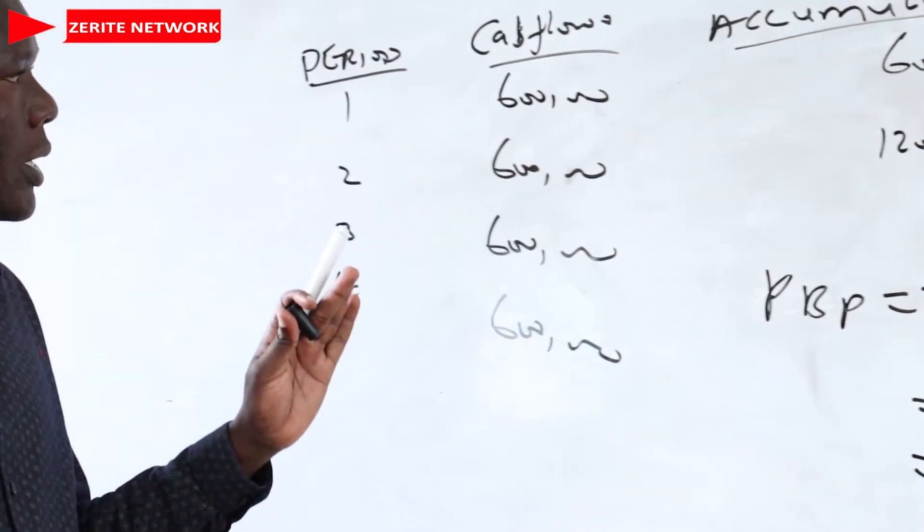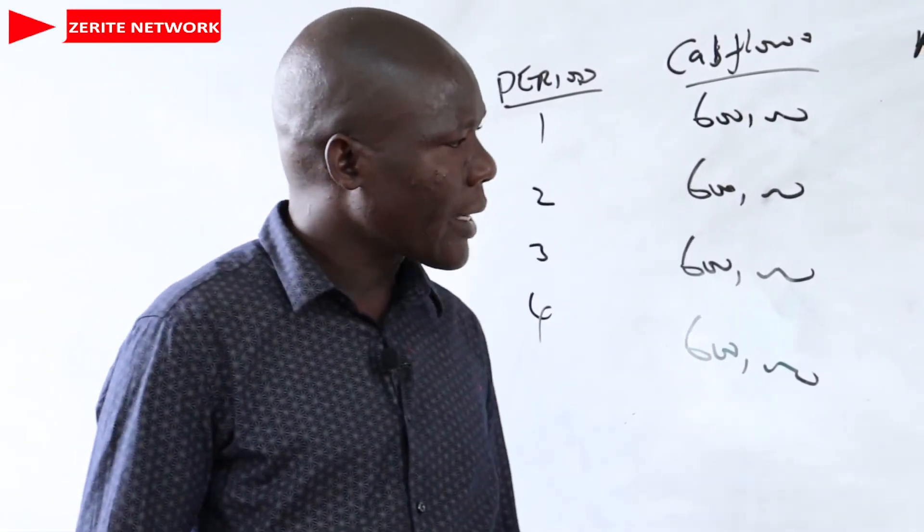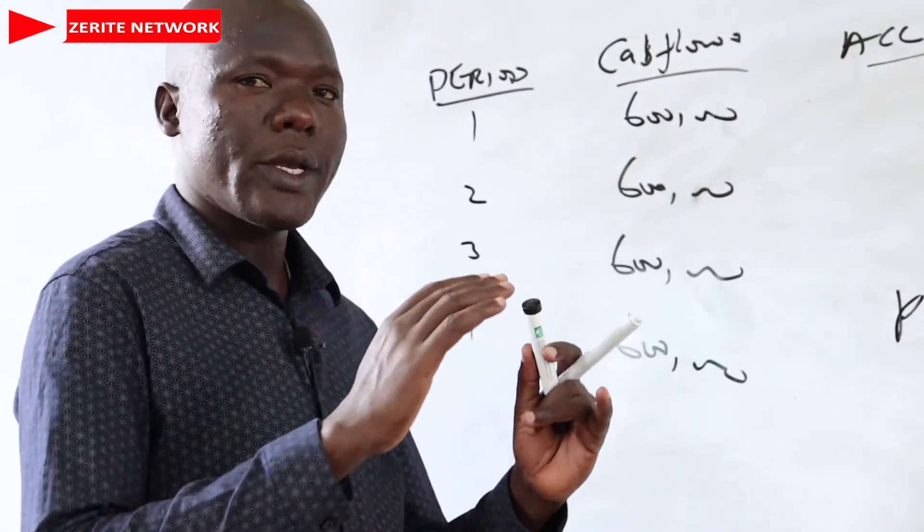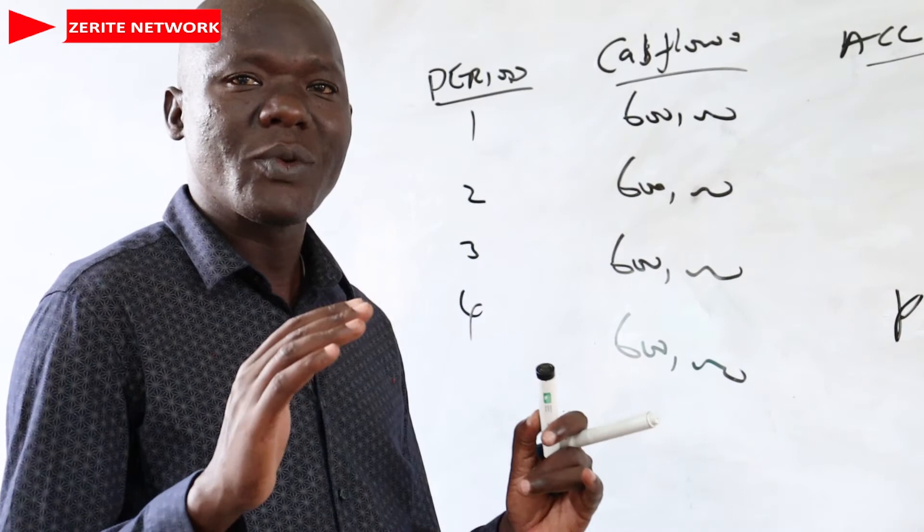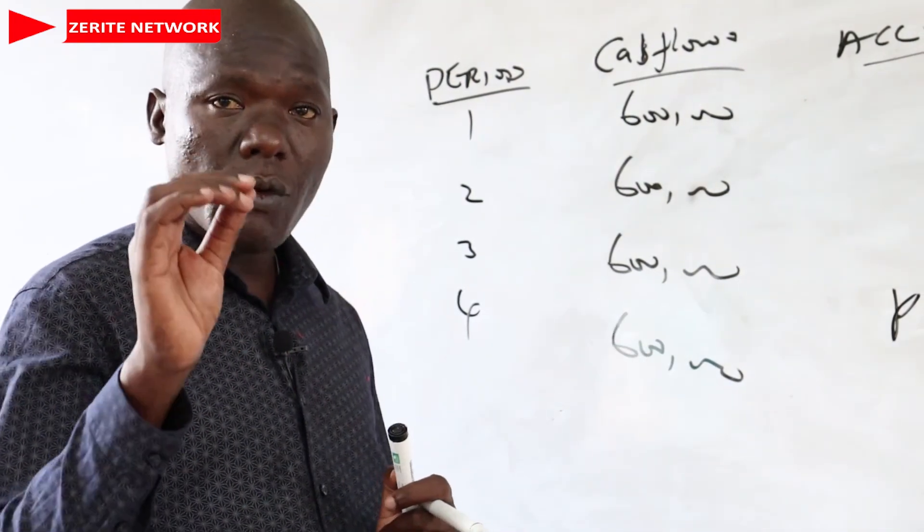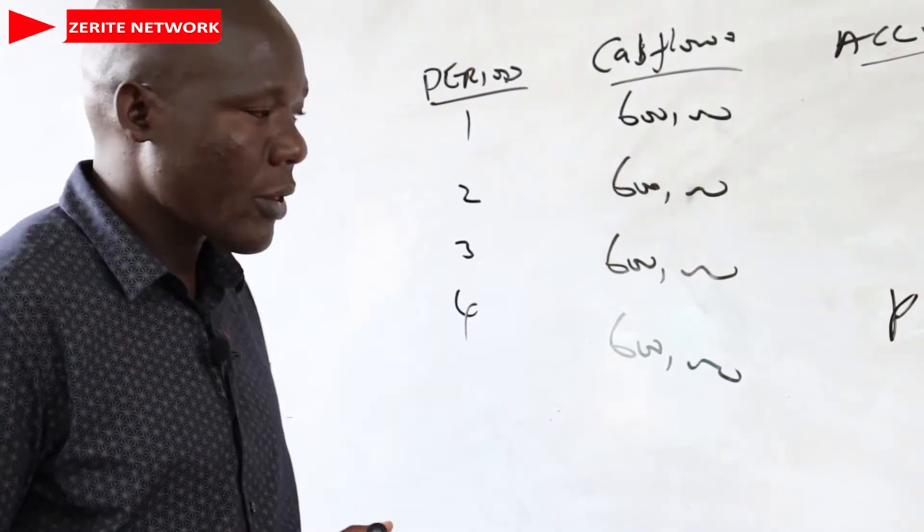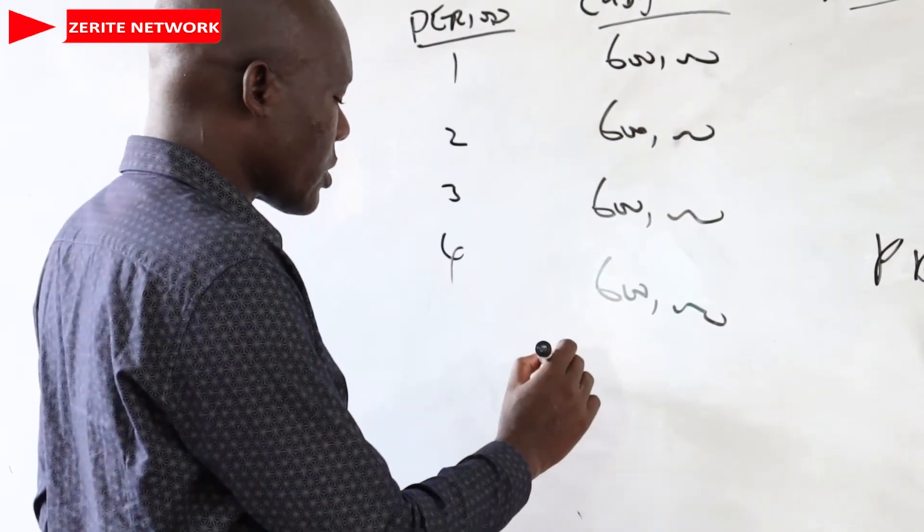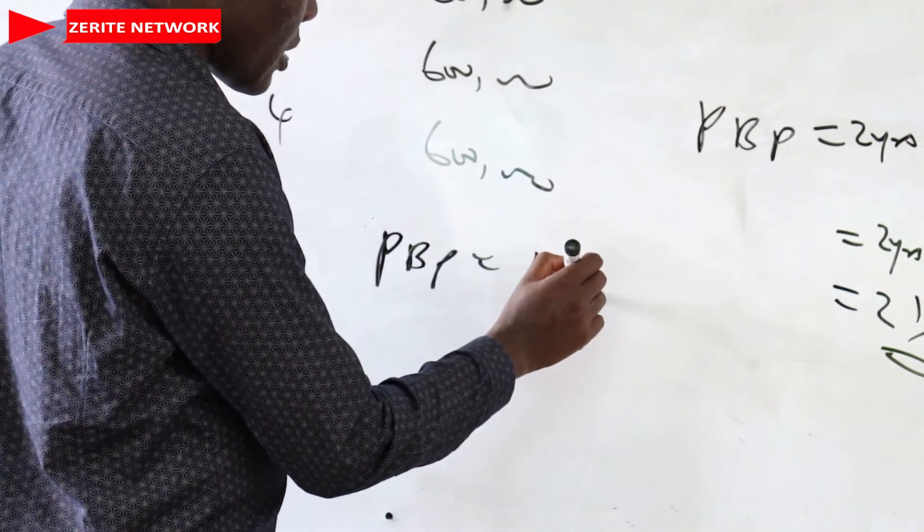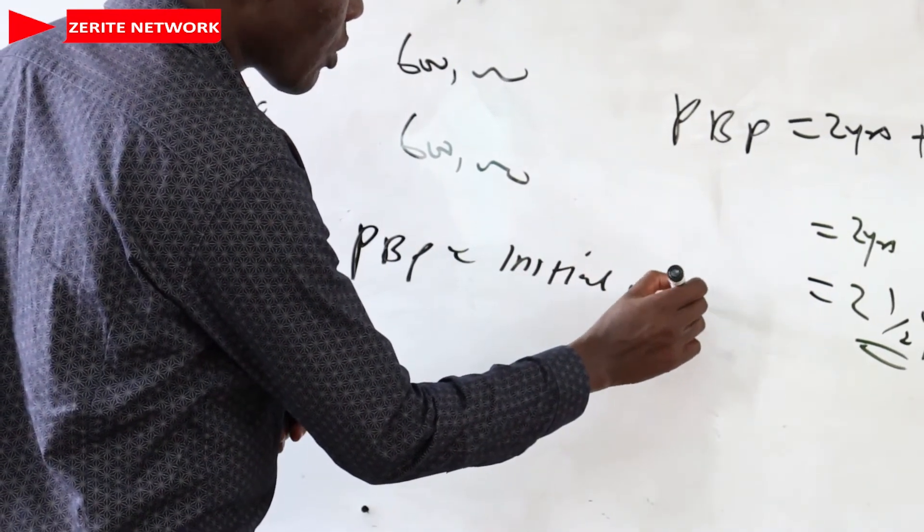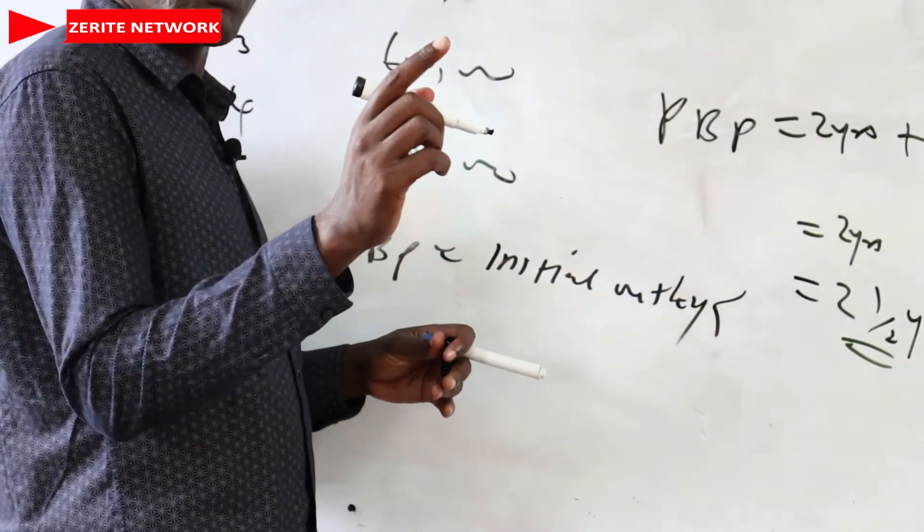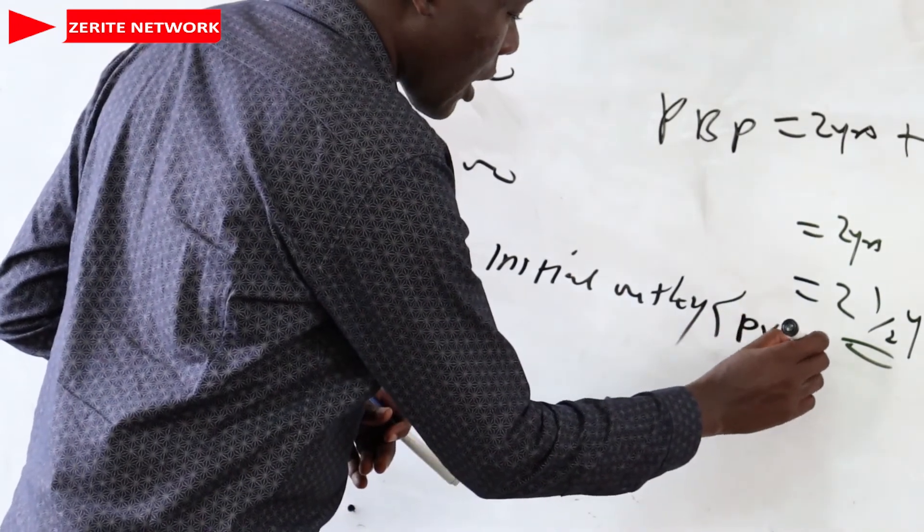But if you don't want to do it like that, in most situations, we will apply the formula once you have seen that the cash flow is an annuity for all the periods you have been given. Again, it is advisable for a student to use the formula for getting a payback period. So the formula for getting the payback period, PBP is equal to initial outlay, initial outlay. In bracket, we can call it the present value cash flow.